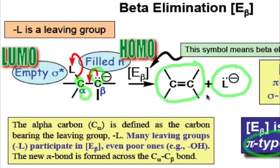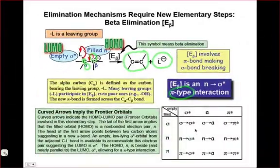This is a very important process under basic conditions, where a strong base can deprotonate a carbon to generate an anion, which can then kick off a leaving group to form a double bond.